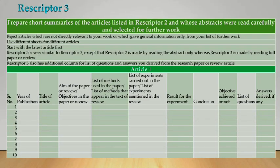The next slide shows Rescriptor 3, where the abstracts were read properly and the most relevant articles were selected for further study. Rescriptor 3 is similar to Rescriptor 2 except that here you are making it after reading the full paper, whereas Rescriptor 2 was made only by reading the abstract. Also, in this sheet the last three columns have to be strictly filled based on your own opinion and your own thoughts. You have to describe whether you think the objective was achieved or not, and list out any questions which came to your mind while reading the article. For each article, a different sheet has to be used.